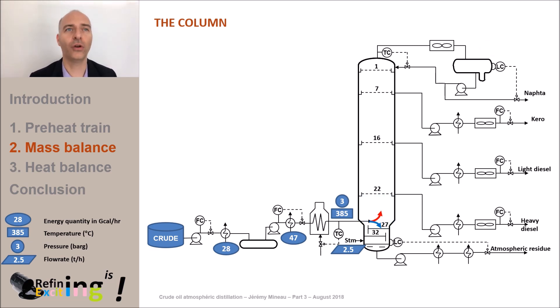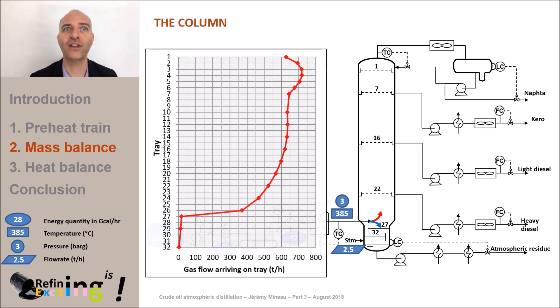On this graph, we see the evolution of the gas flow that arrives on each tray in the tower. On trays 32 to 27, the gas flow arriving on the trays is small and corresponds to the stripping steam of the bottom of the tower which strips the lighter hydrocarbons from bottom liquid. When the upward gas flow arrives in the flash zone, it is mixed with the 344 tons per hour of gas from the feed. This is the reason why on tray 27, there is a jump in the gas flow of about 350 tons per hour.